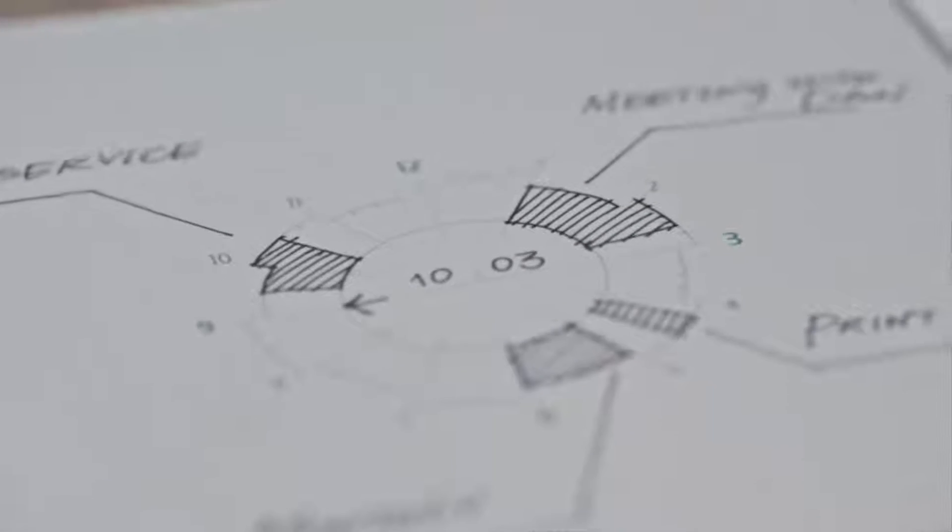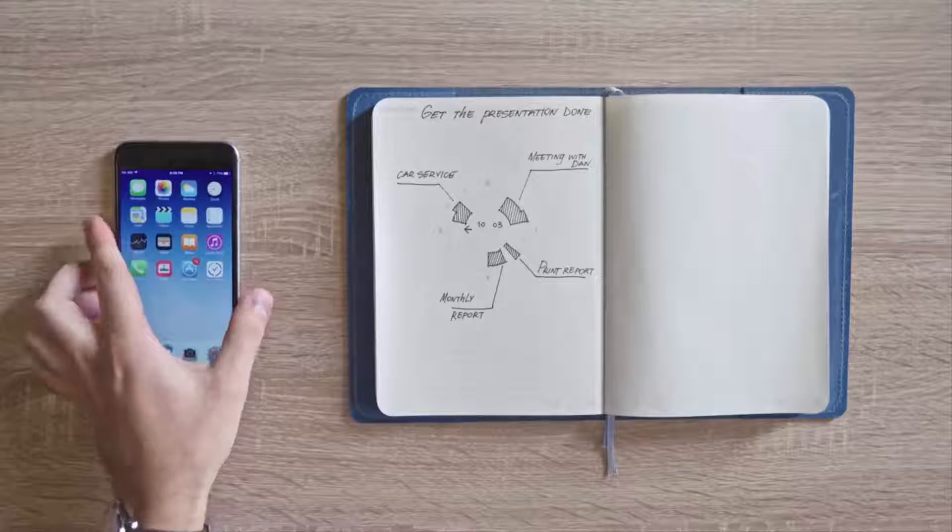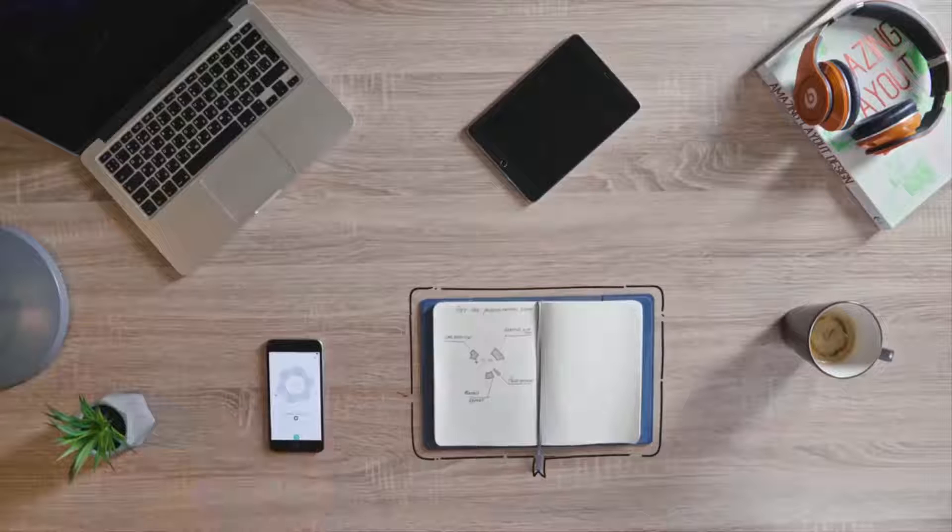So we designed the Slice Planner, the undated handcrafted paper planner made from all natural materials and premium Swedish paper, and developed an app that merges paper events with your favorite digital calendars.